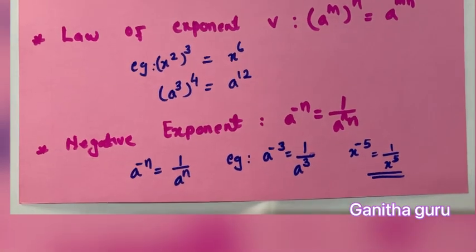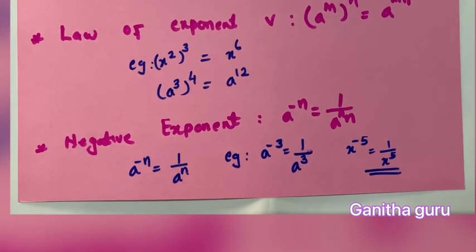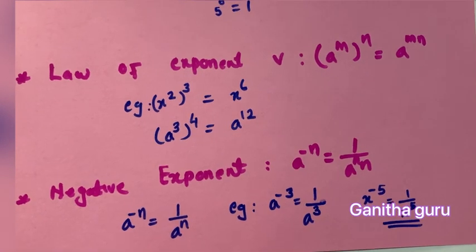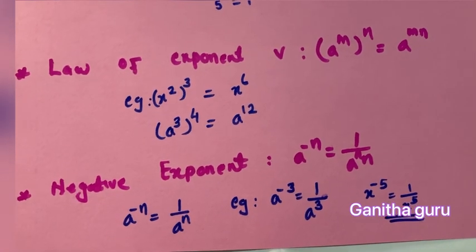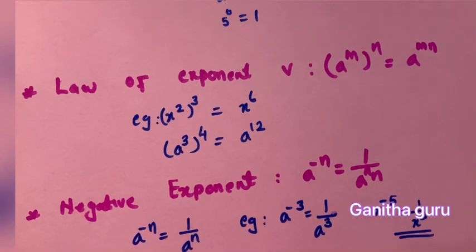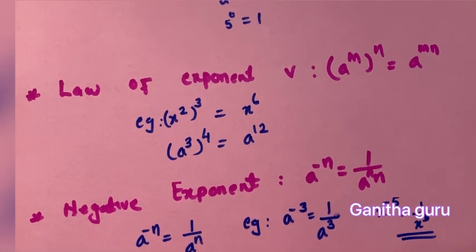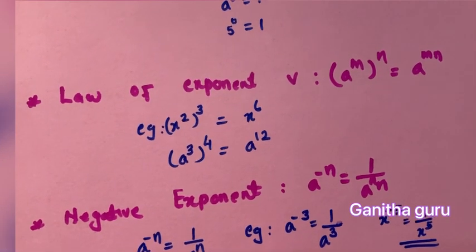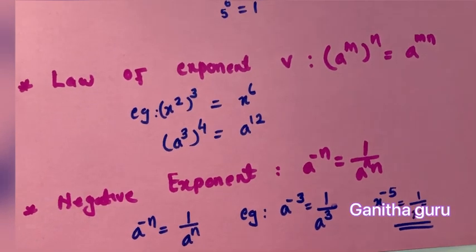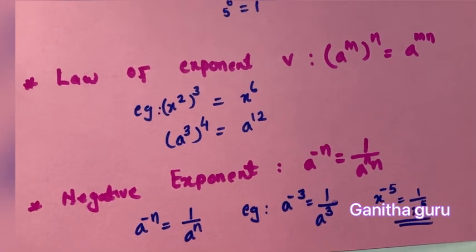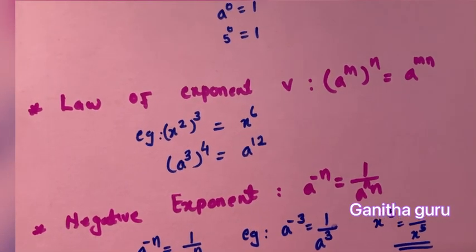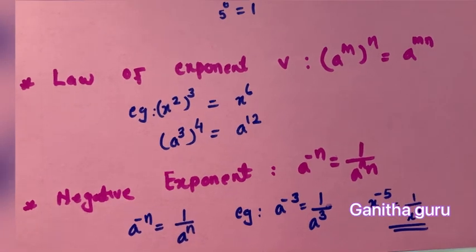The negative exponent law: a raised to minus n equals 1 by a raised to n. Applying the division rule, x raised to 2 by x raised to 4 gives x raised to 2 minus 4, which is x raised to minus 2. A raised to minus 3 is 1 by a raised to 3 — negative exponent means reciprocal. So x raised to minus 5 is 1 by x raised to 5.